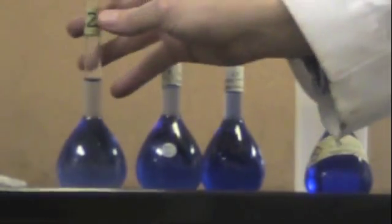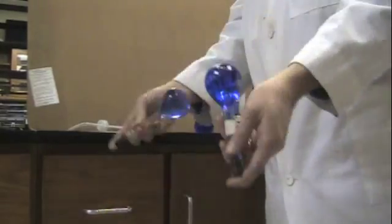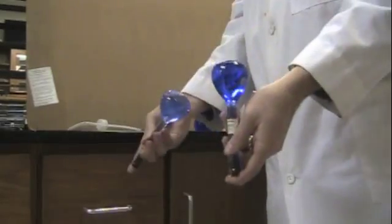After you get them diluted, you need to make sure your solutions are mixed thoroughly. So what you're going to do is stopper them with the appropriate size stopper and then you're going to invert and mix them like this. Invert at least 20 times. It's a good idea to hold your finger over the top of the stopper.